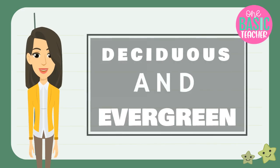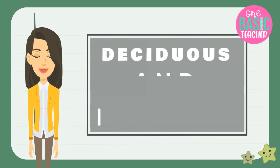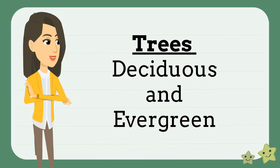In this episode, we're going to learn about deciduous and evergreen trees. There are many kinds of trees. Most can be placed into two categories: deciduous and evergreen trees.